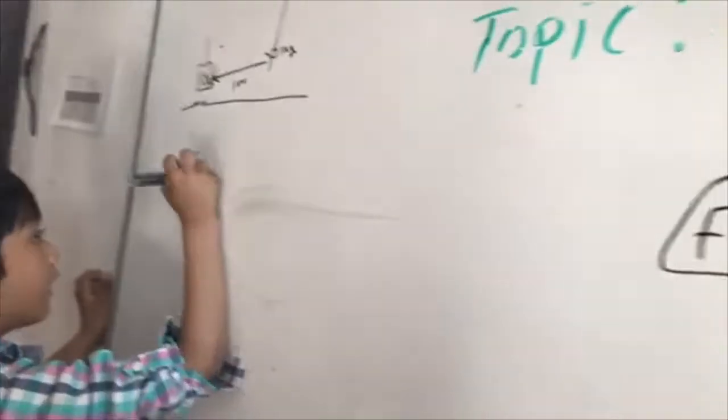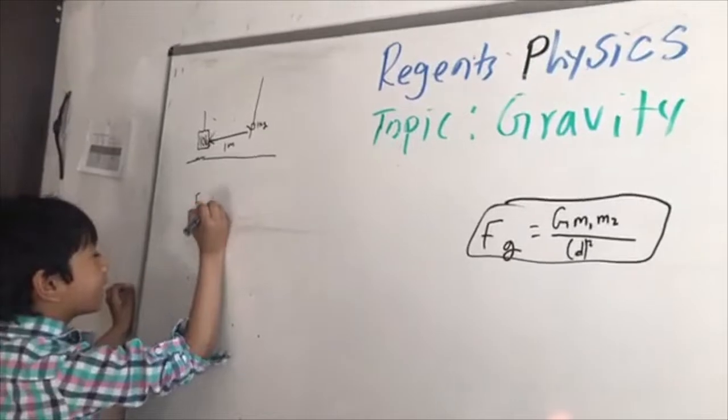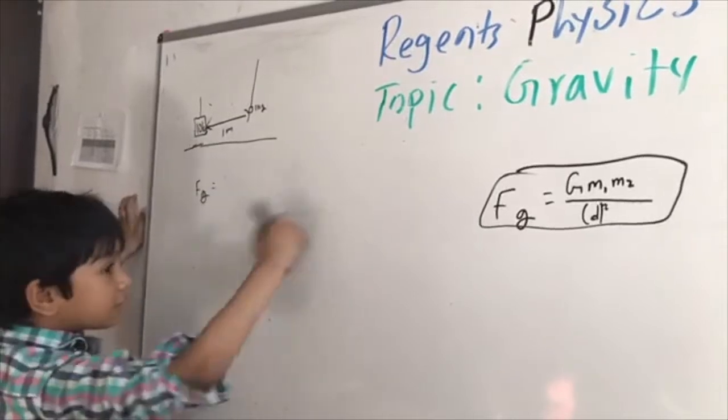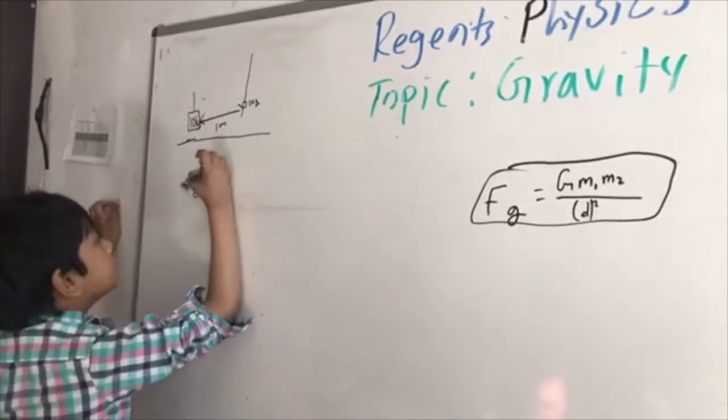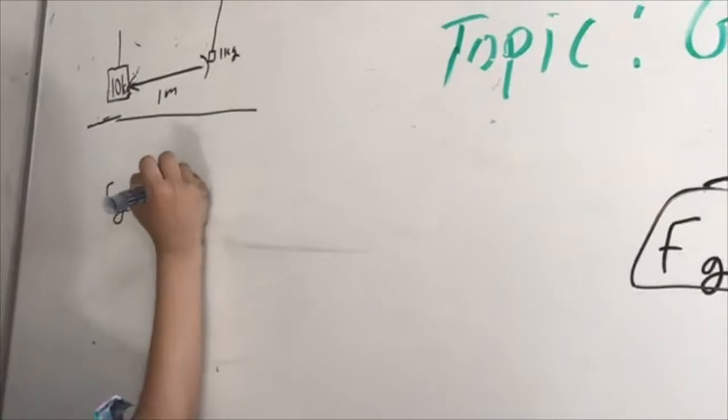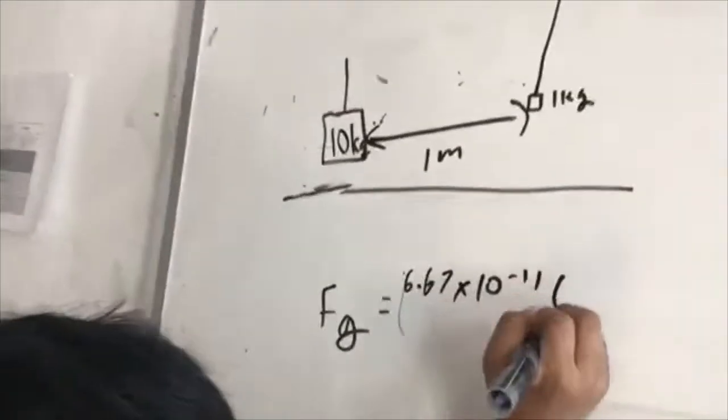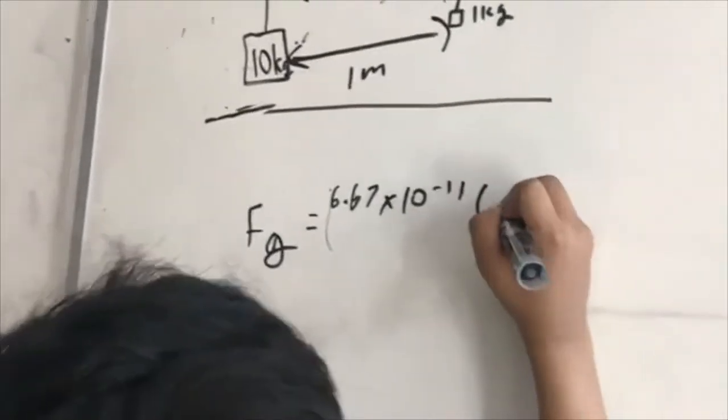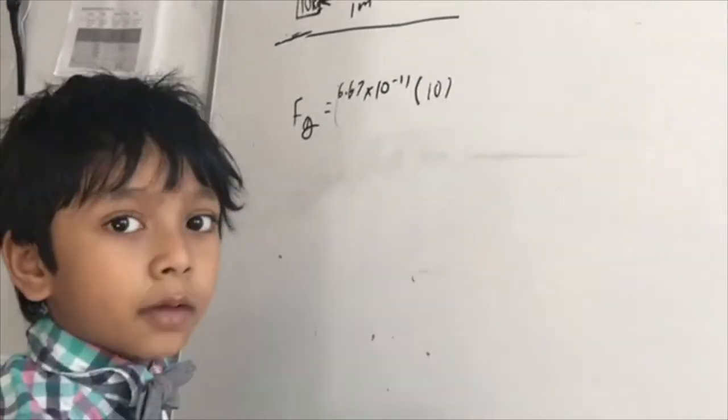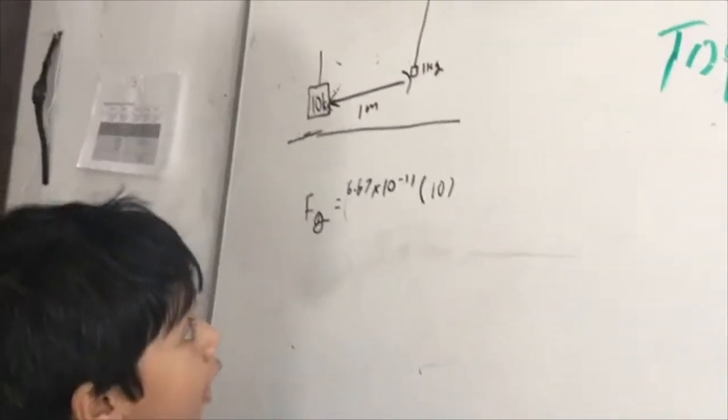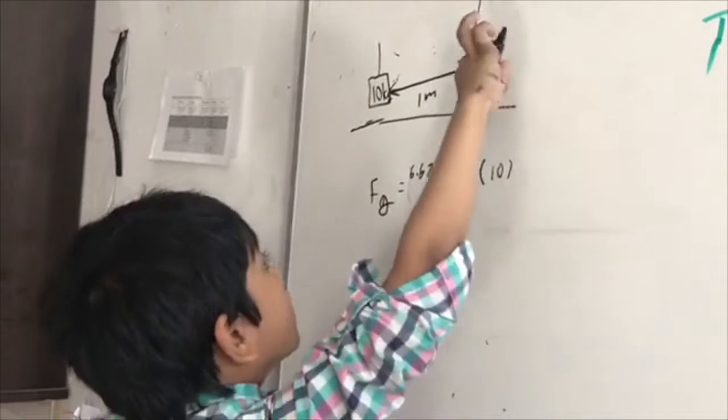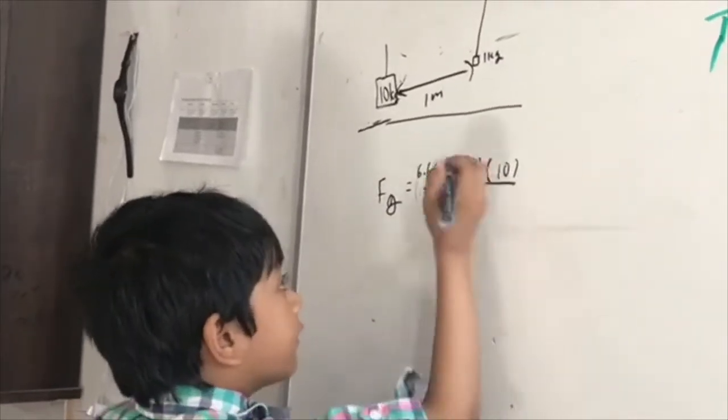Fg is equal to G, the gravitational constant, which is 6.67 times 10 raised to the negative 11, multiplied by the mass of one object, multiplied by the mass of another object. And even dumb people know that anything times 1 is itself. So, let's just put nothing there.